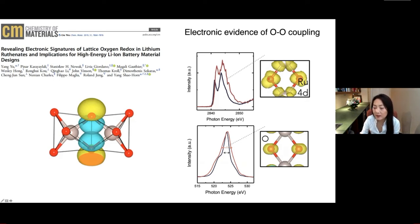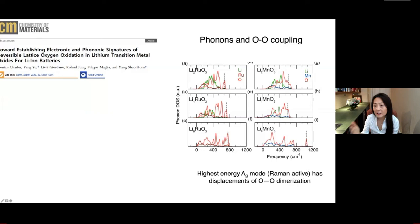Beyond the electronic structure signature of oxygen coupling, we also observed a unique phonon spectra changes. Removing lithium from lithium ruthenate, we didn't see the creation of the characteristic frequency related to oxygen dimers like what we see typically for lithium manganate. This signal around 1000. Instead, for lithium ruthenate, we see there is hardening of oxygen oxygen stretching. And this is indicative of a stronger oxygen oxygen interactions within the oxide lattice.